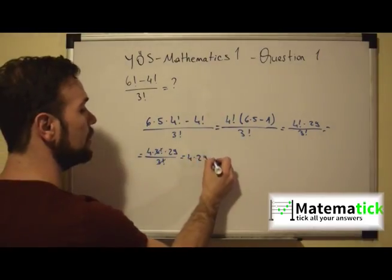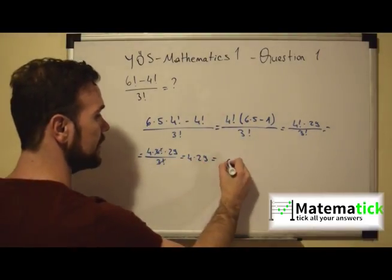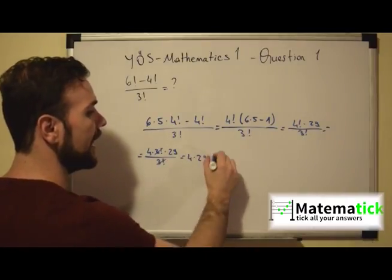So we have 4 times 29 which is equal to 4 times 9 is 36, 6 and we have 3 so it's 116.